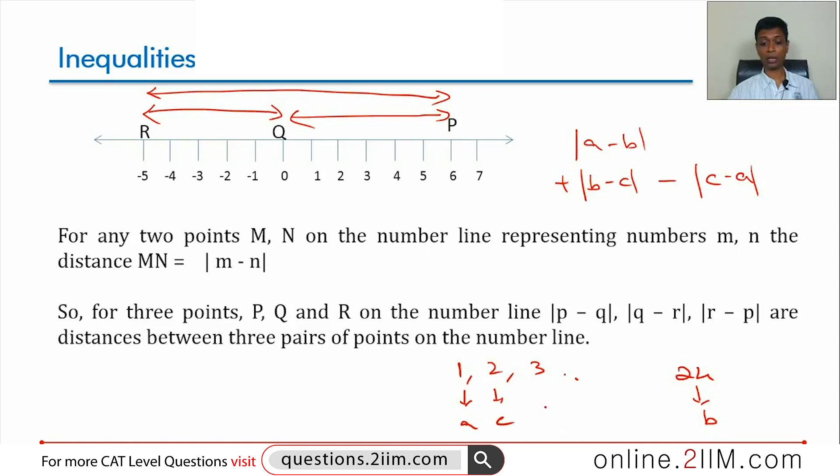So, modulus of A minus B would be 23. Modulus of B minus C would be 22. Modulus of A minus C would be 1, 23 plus 22 minus 1, this is 44.